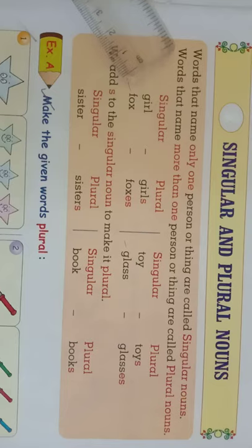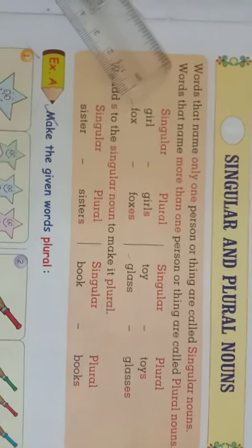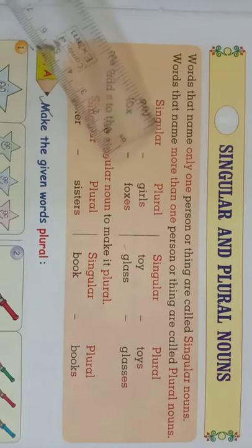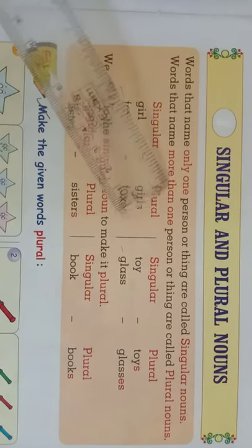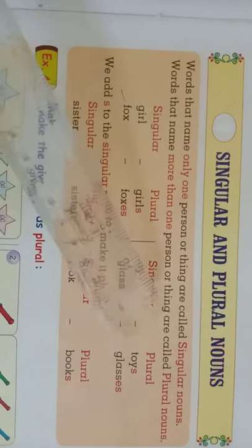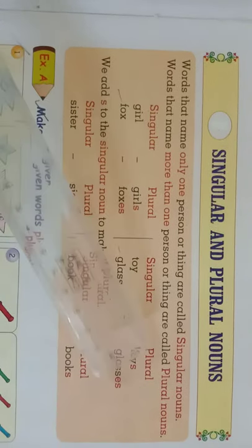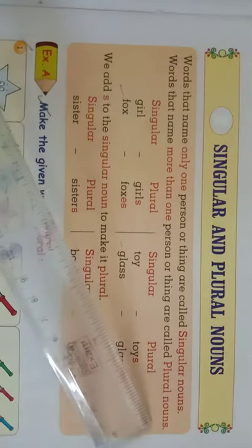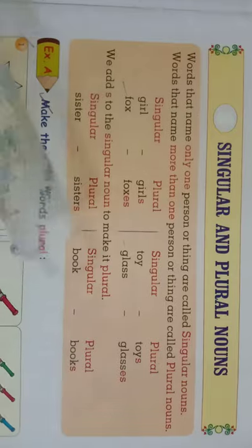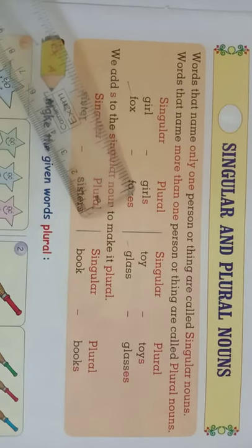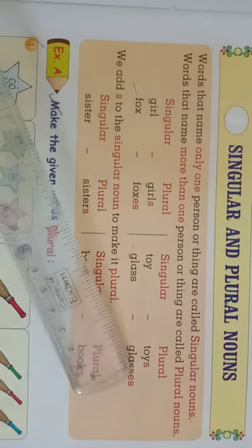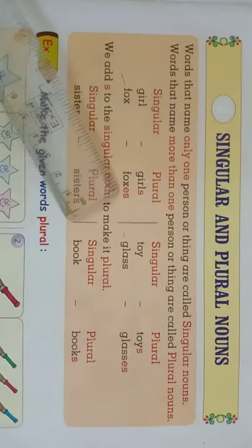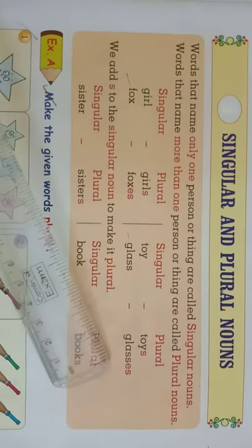What is a plural noun? Words that name more than one person or thing are called plural nouns. For example: girls, toys, foxes, glasses.